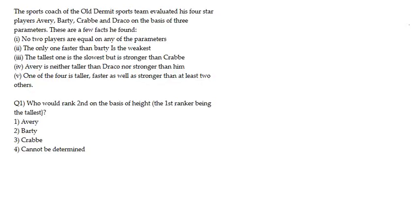No two players are equal on any of the parameters. The only one faster than Bharti is the weakest — so one parameter is speed and another is strength. The third point is the tallest one is the slowest but is stronger than Crab, which tells us the third parameter is height.